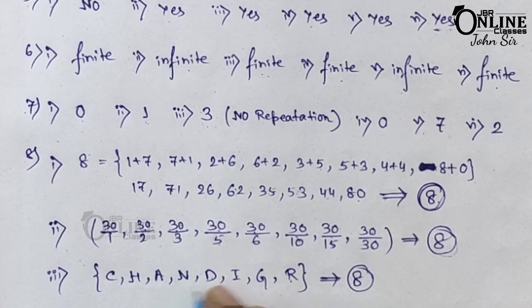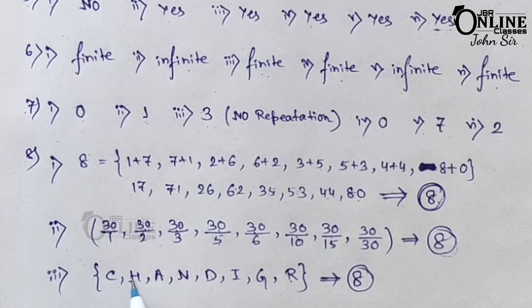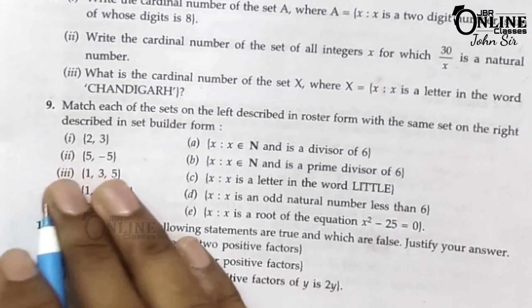Again, no repetition is allowed here. That's why only C, H, A, N, D, I, G, and R are counted — giving a cardinal number of 8.